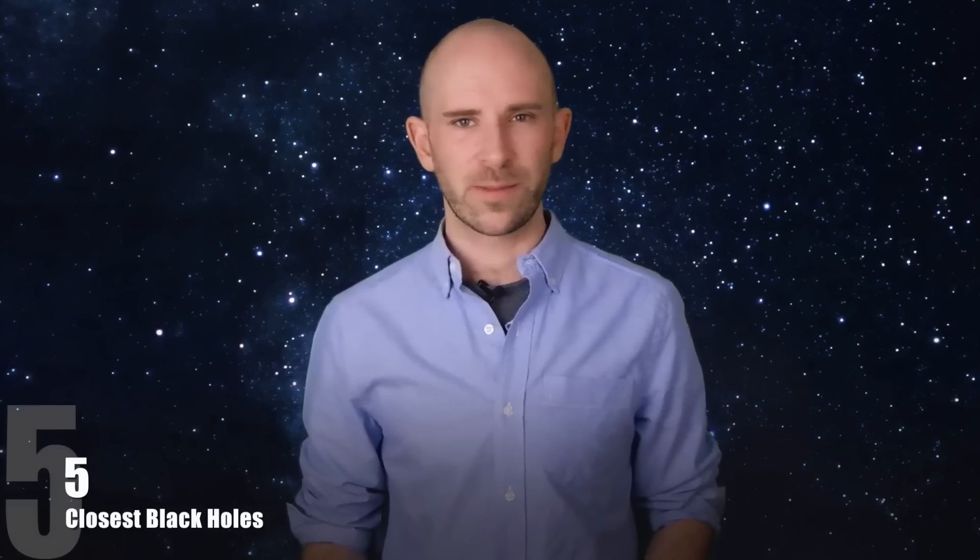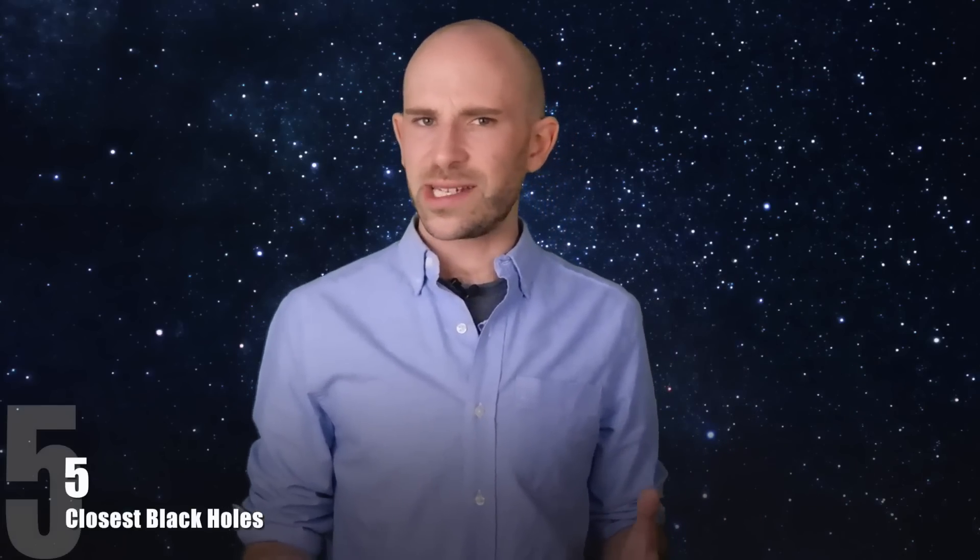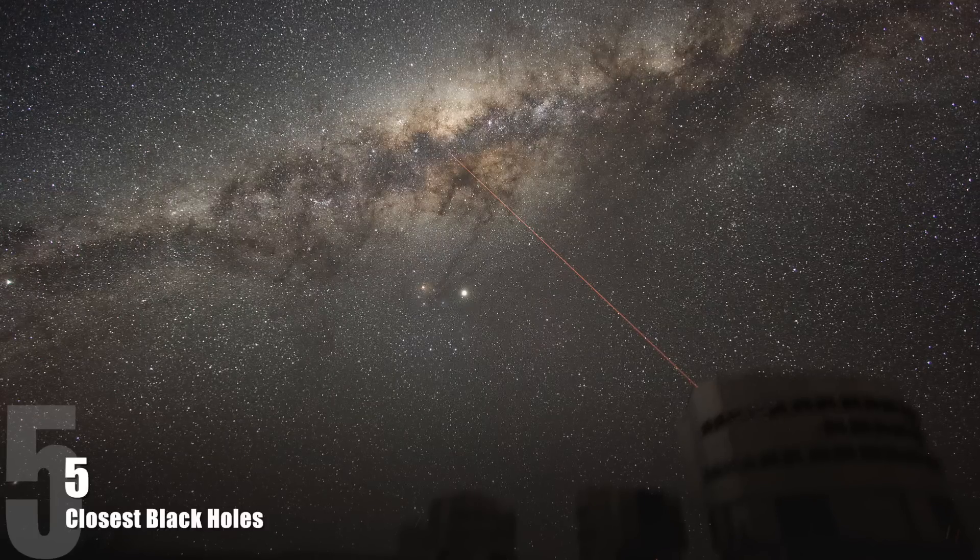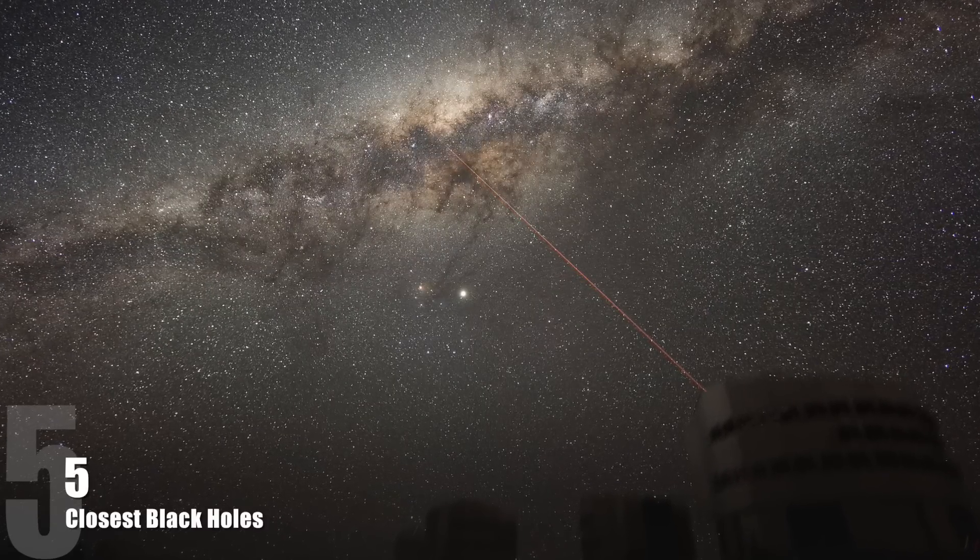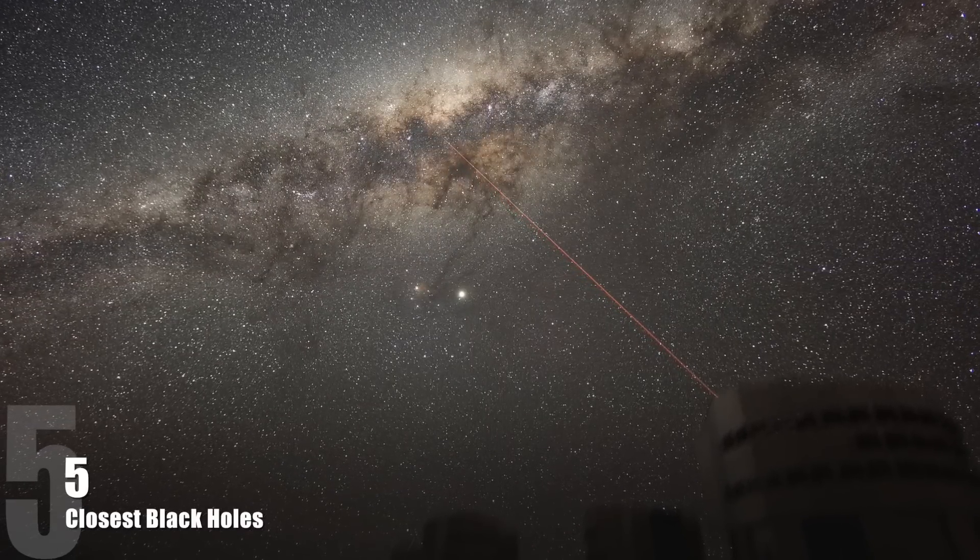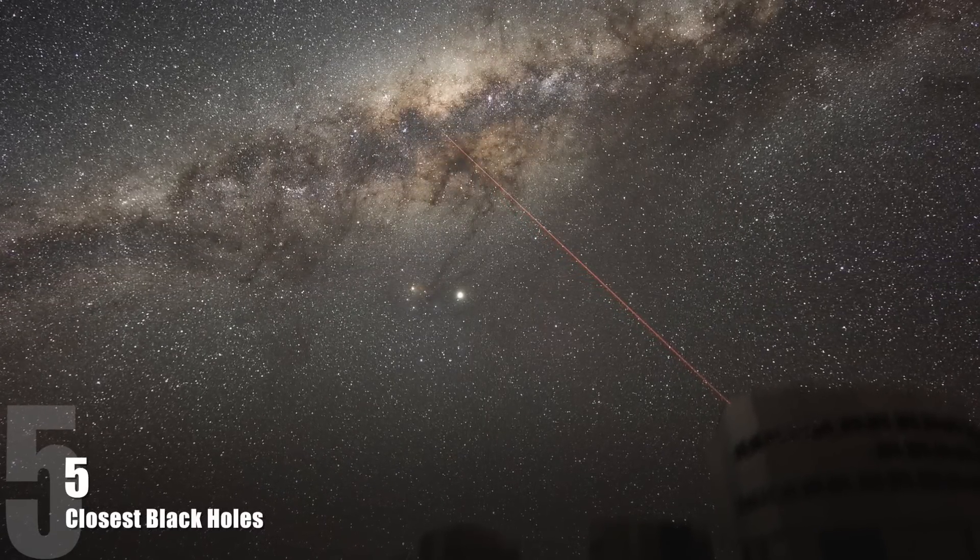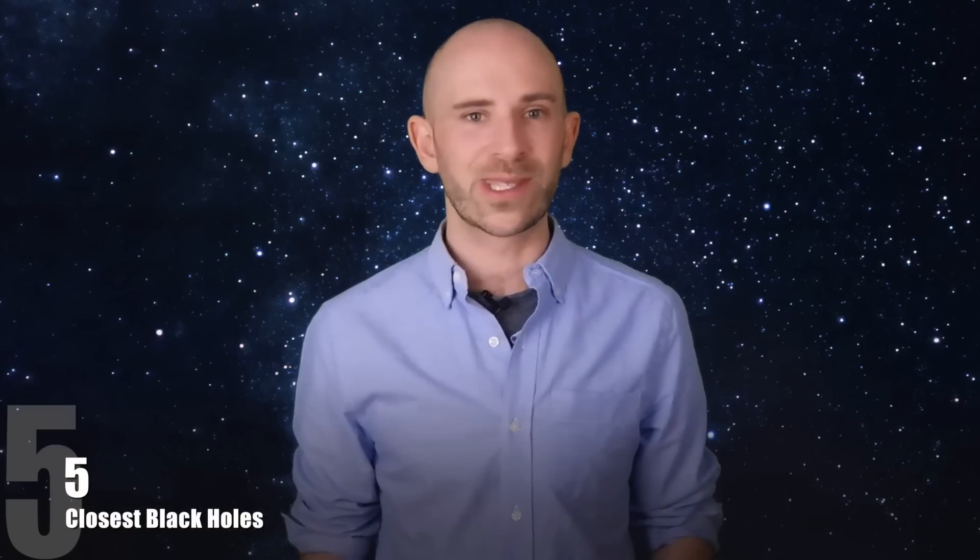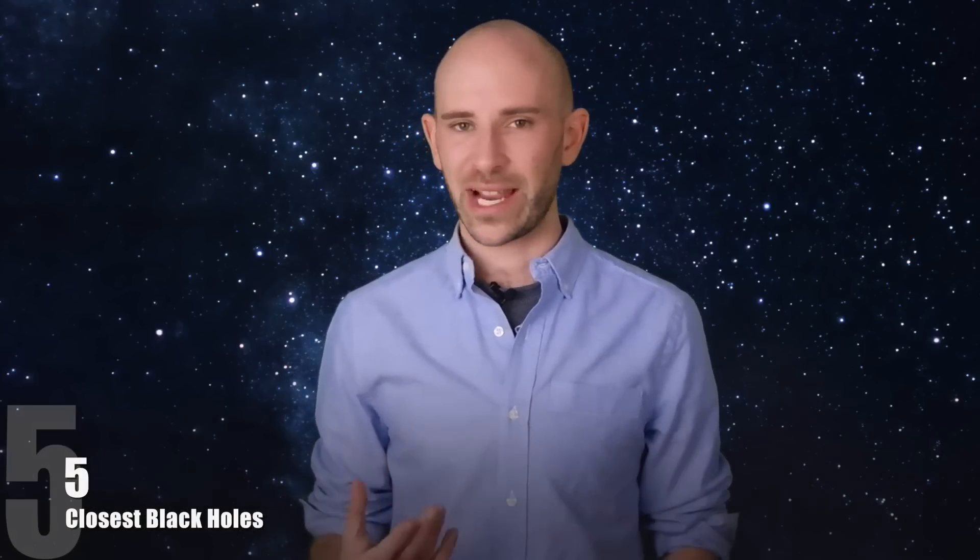5. Closest Black Holes. Since black holes are so hard to detect, we aren't exactly sure where the closest one is. At first, researchers believed the closest one was at the center of the Milky Way, but currently it is believed that V616 Mon in the Monoceros constellation, about 3,000 light years away, is the closest black hole.